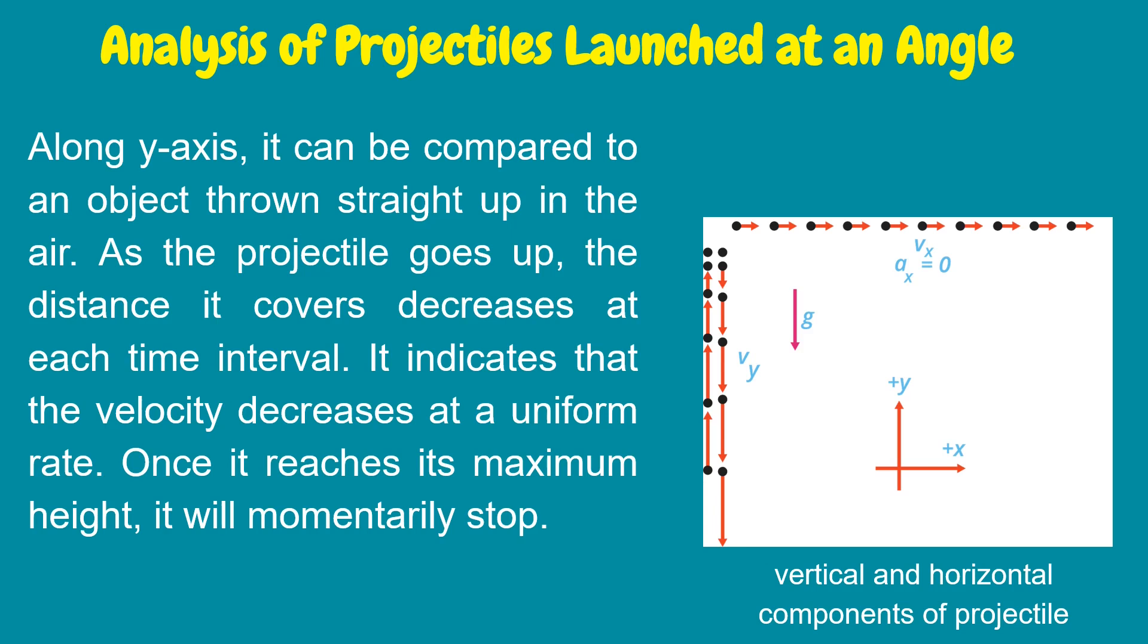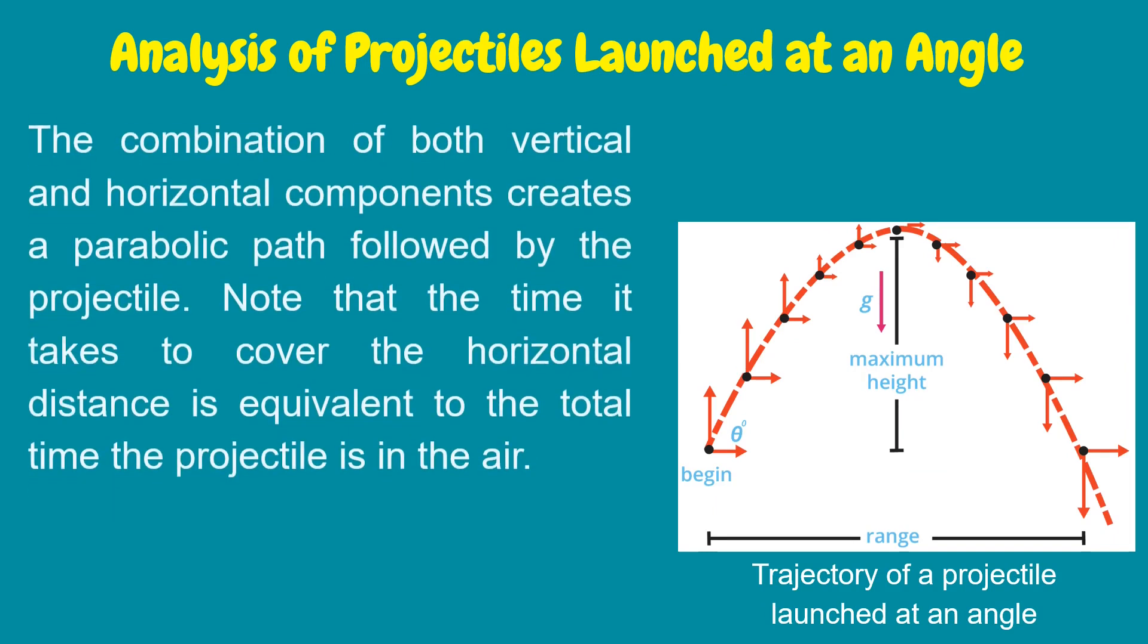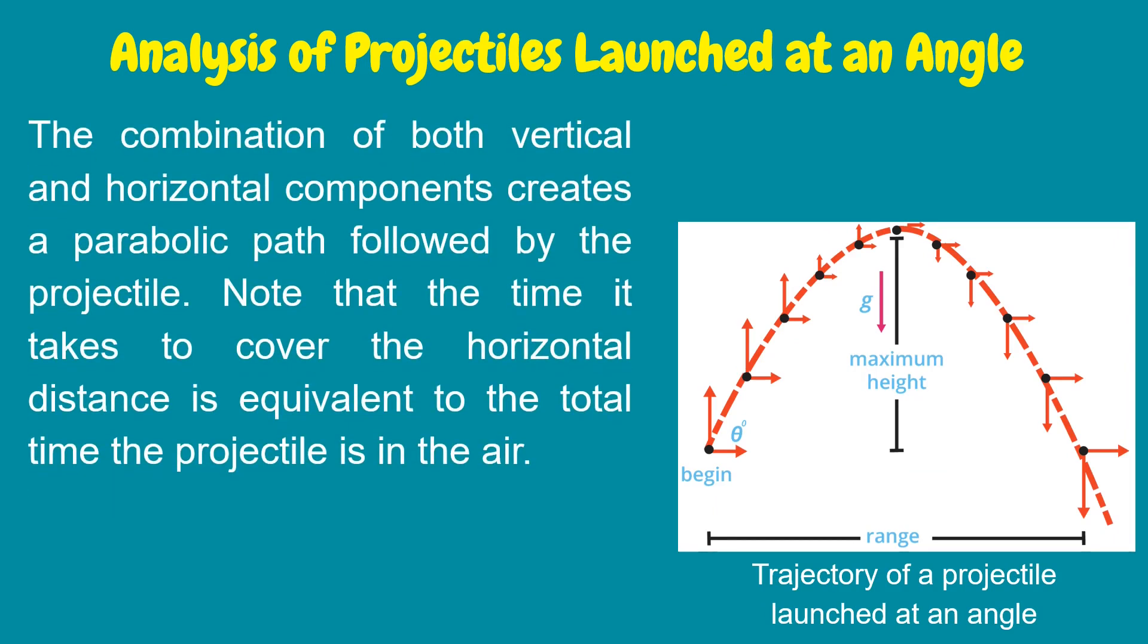It indicates that the velocity decreases at a uniform rate. Once it reaches its maximum height, it will momentarily stop. The combination of both vertical and horizontal components creates a parabolic path followed by the projectile. Note that the time it takes to cover the horizontal distance is equivalent to the total time the projectile is in the air.